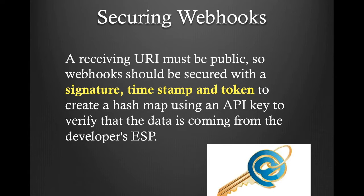Since you will be setting up a public-facing URL, you should look into securing your webhook. Each webhook event will always contain three parameters you can use to validate it: the signature, timestamp, and token. To verify the webhook has originated from Mailgun, you concatenate the timestamp and token values, then encode the resulting string with the HMAC algorithm using your API key as the key in SHA-256 digest mode. Once you have both, you can compare the resulting hex digest to the signature. If they match, success. If not, it might be someone trying to do replay attacks on your app. Optionally, you can cache the token value locally and not honor any subsequent requests with the same token to prevent replay attacks.